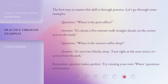The best way to master this skill is through practice. Let's go through some examples. Question: 'Where is the post office?' Answer: 'It's about a five-minute walk straight ahead, on the corner next to the bank.' Question: 'Where is the nearest coffee shop?' Answer: 'It's just two blocks away. Turn right at the next street — it's across from the park.' Remember, practice makes perfect. Try creating your own 'where' questions and answers.